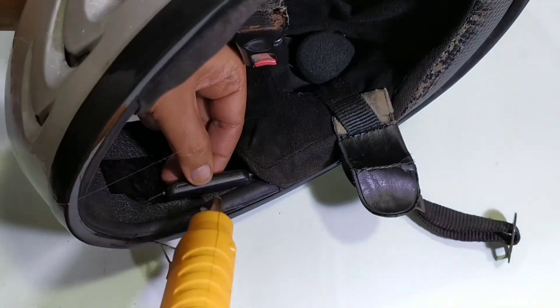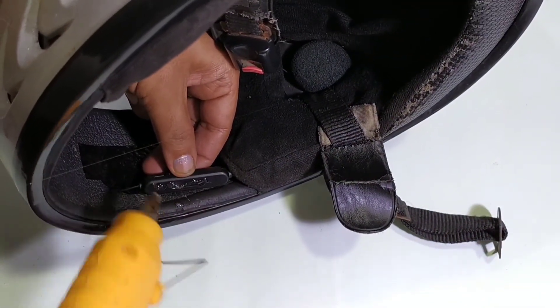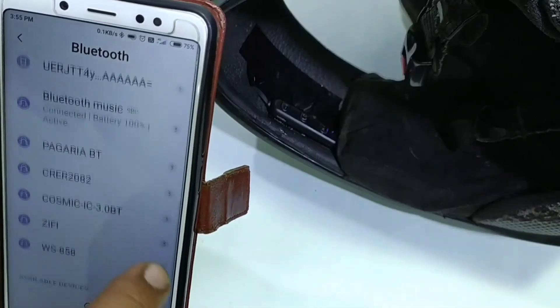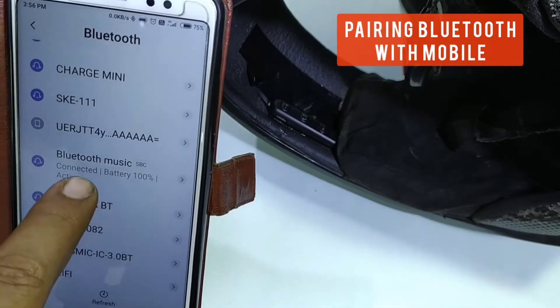This is our Bluetooth module. We'll fix it on the helmet in the middle with the microphone. Now let's pair it with our phone.